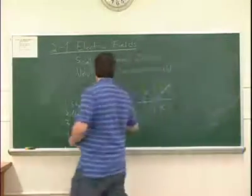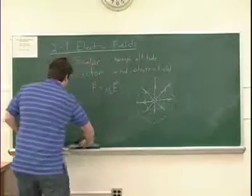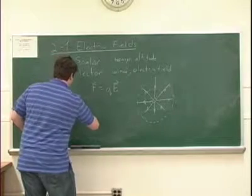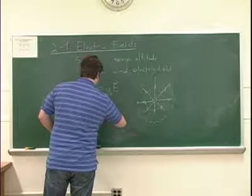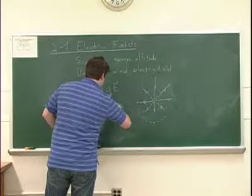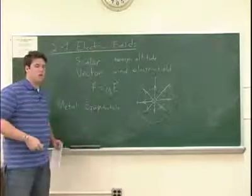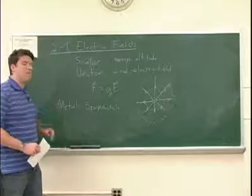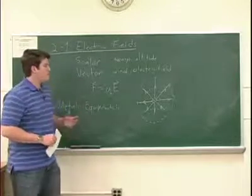Another thing to note about potentials and equipotentials is that metals are equipotentials. And this gives way to something called the electrical shielding theorem. Inside a metal, the electrons are allowed to move around freely.